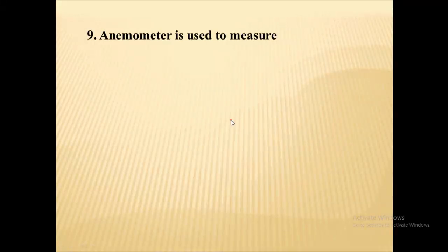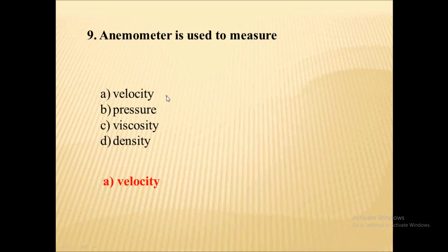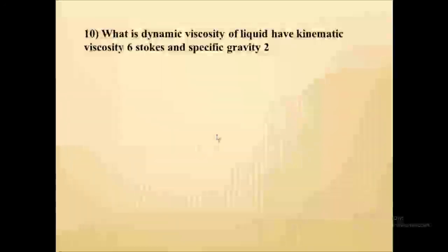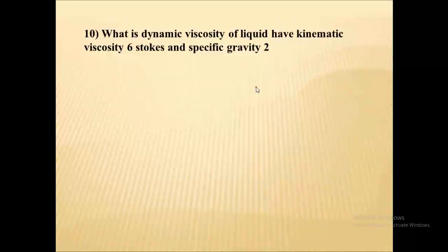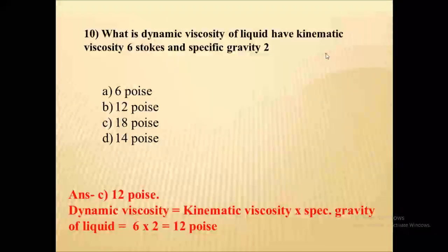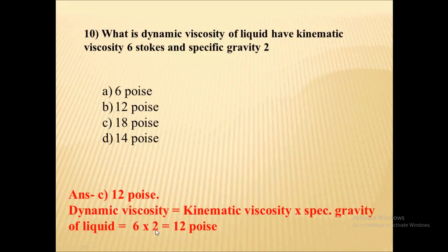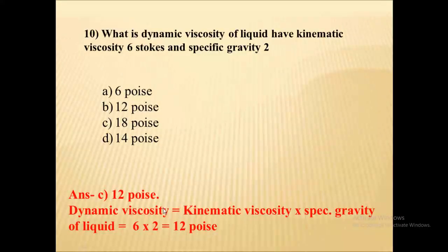An anemometer is used to measure the velocity of fluid flow. Next, what is the dynamic viscosity of a liquid having kinematic viscosity 6 stoke and specific gravity 2? Dynamic viscosity equals kinematic viscosity multiplied by specific gravity. Putting the values, 6 × 2, you get 12 poise as the dynamic viscosity.